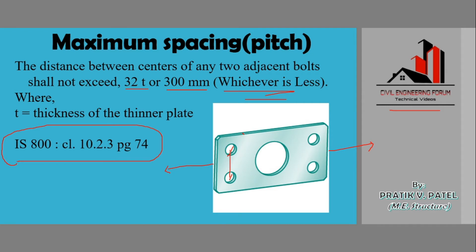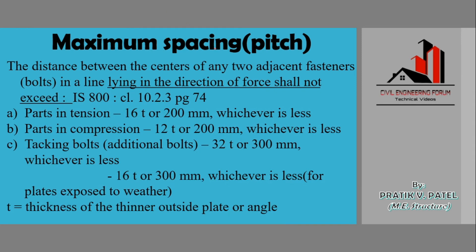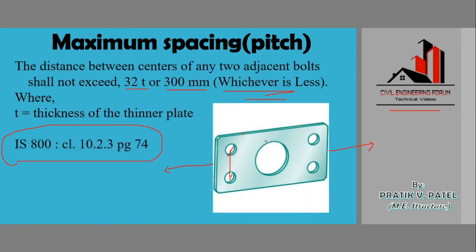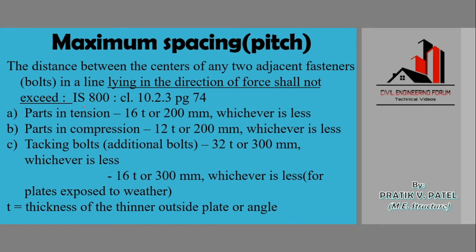The first criteria decided the distance between two adjacent bolt holes at 90 degrees to the line of action of the force. The second criteria is maximum spacing in the direction of the force — this is known as pitch. The distance between the center of any two adjacent fasteners (a bolt is a type of fastener) in a line lying in the direction of the force is the pitch. According to IS 800:2007, Clause 10.2.3, Page 74, we divide the criteria based on stresses.